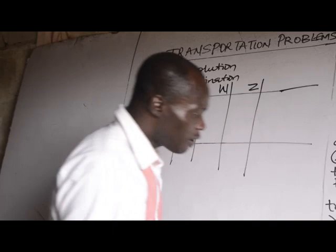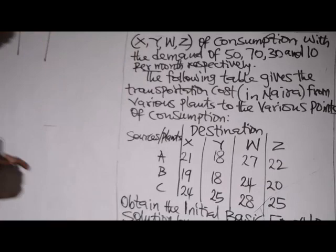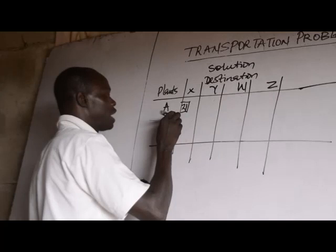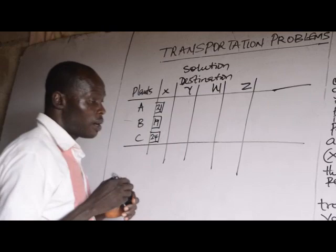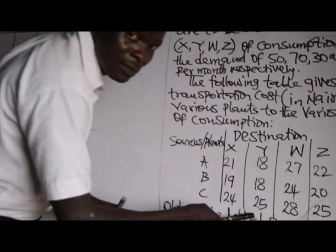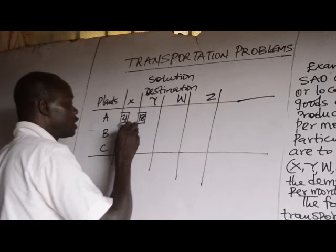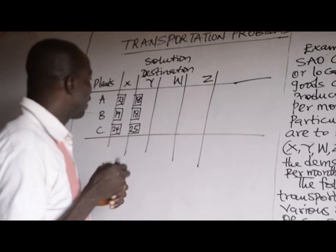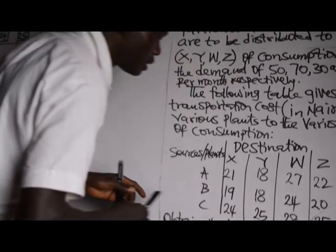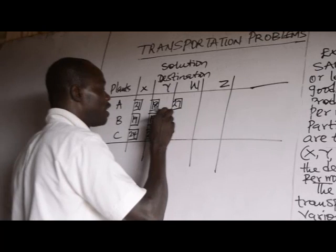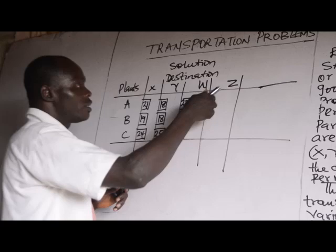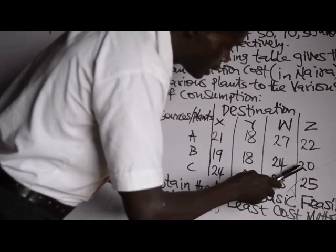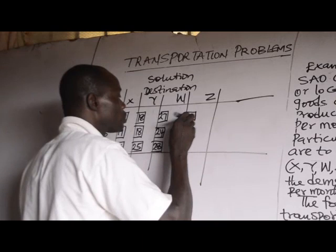For column X, the costs are 21, 19, and 24. For column Y, the costs are 18, 18, and 25. For column W, the costs are 27, 24, and 28. For column Z, the costs are 22, 20, and 25.